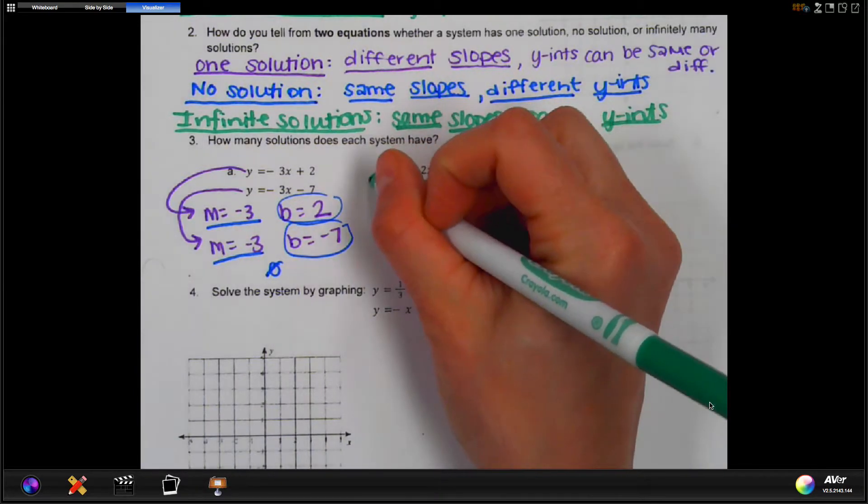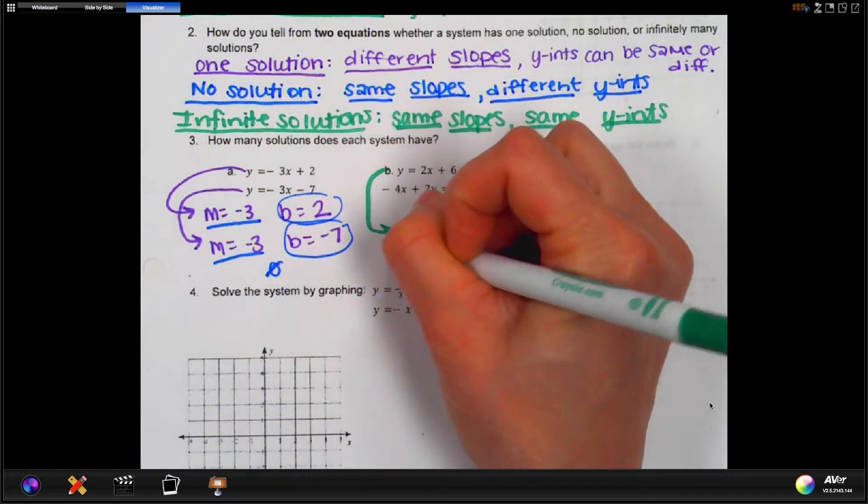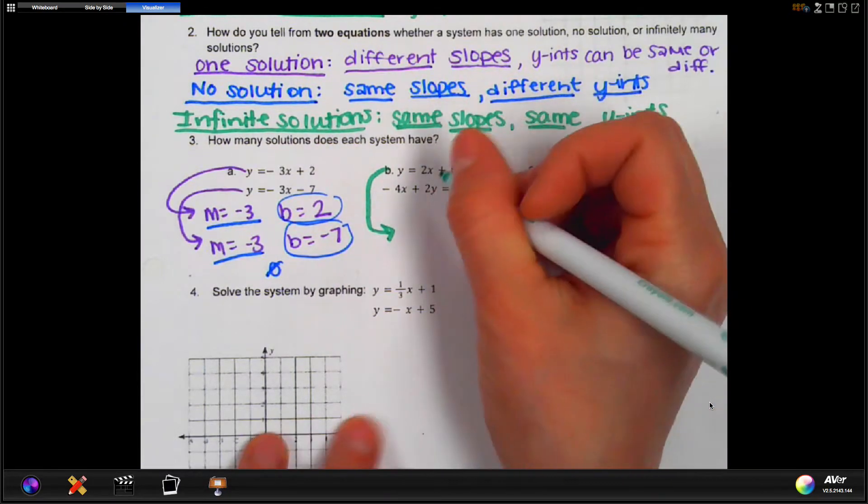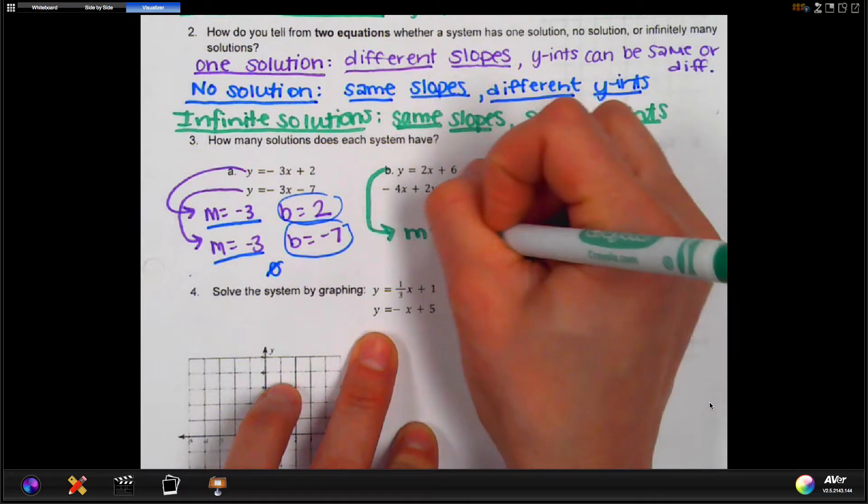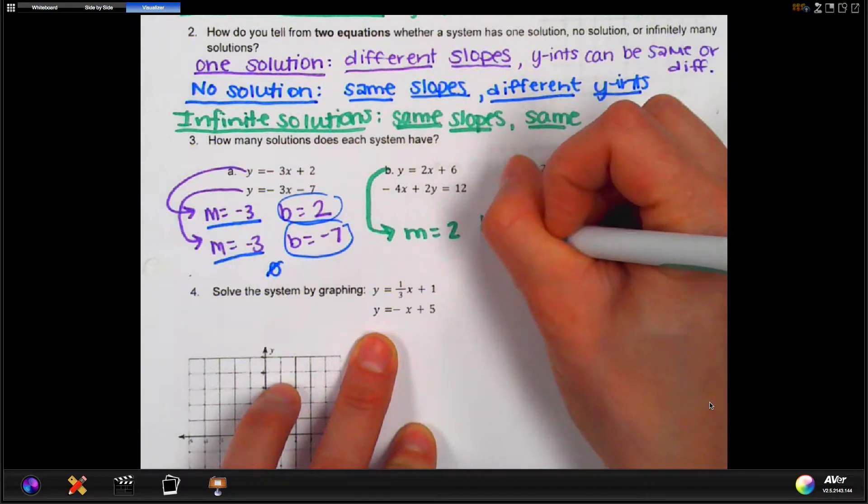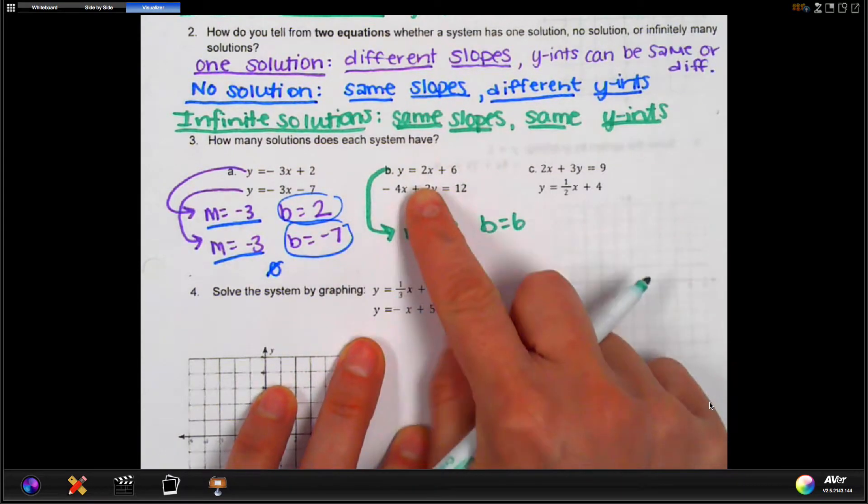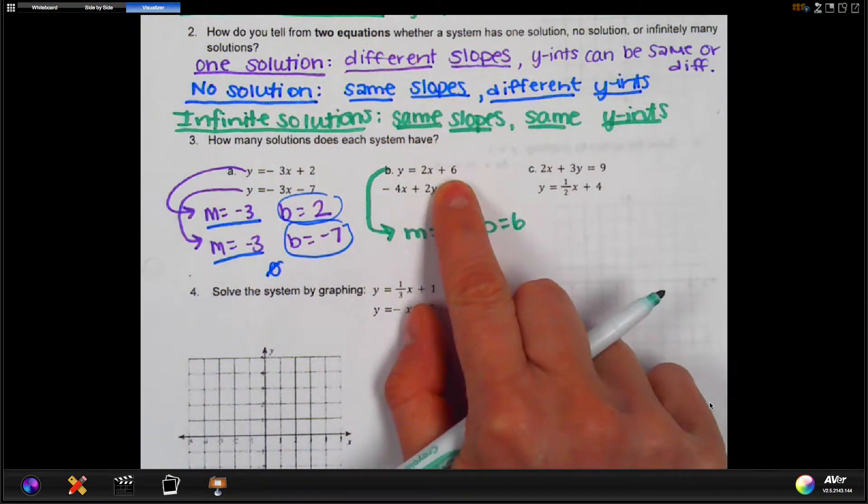Okay, so let's look at part B. Part B, again, the first one is in y equals. So we can start right away by identifying M and B. So I'm going to do that down here and leave a little space because I can see that this one's going to need some work. So M is 2. B is 6. I know that because the 2 is next to the x and the 6 is by itself.